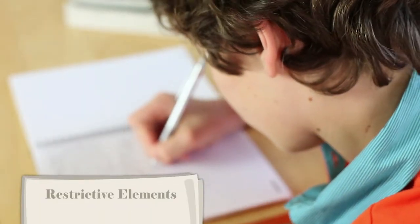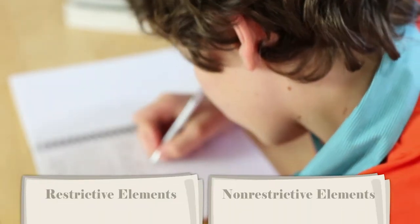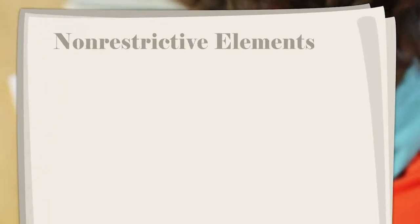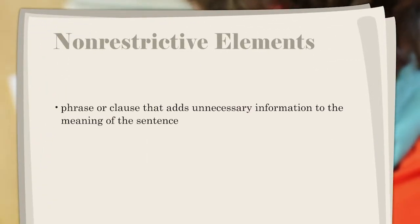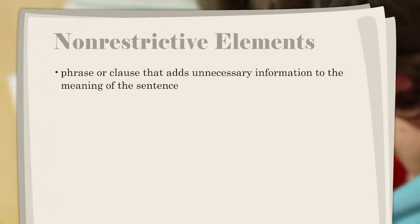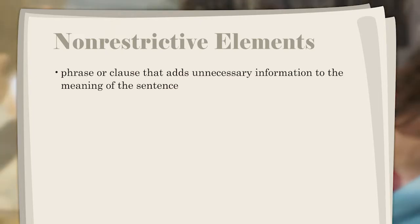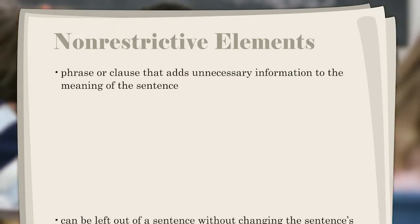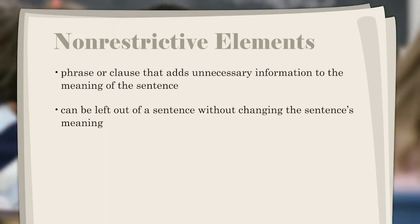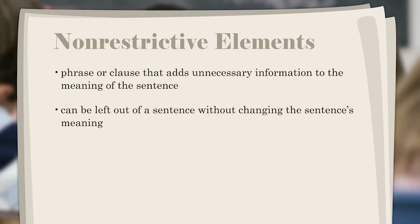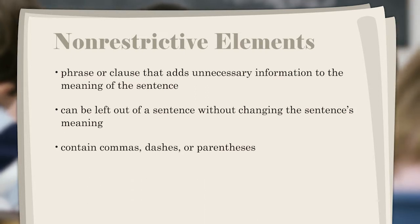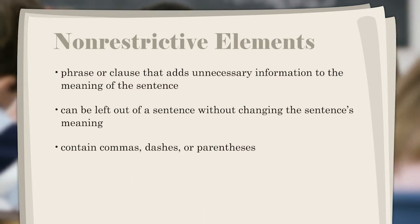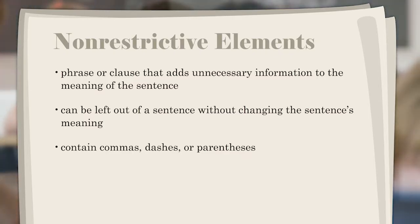Sentences can have restrictive or non-restrictive elements. A non-restrictive element is a phrase or clause that adds unnecessary information to the meaning of the sentence. The phrase or clause can be left out of a sentence without changing the sentence's meaning. Non-restrictive elements contain commas, dashes, or parentheses to separate the unnecessary information from the rest of the sentence.